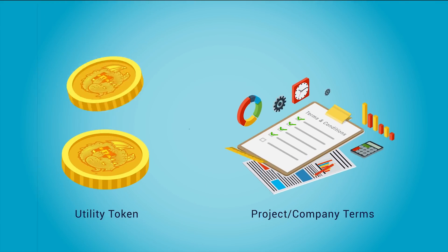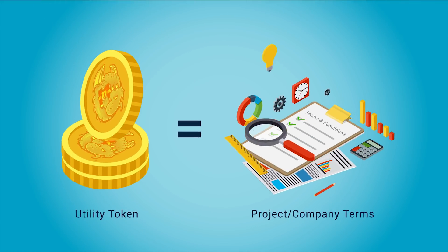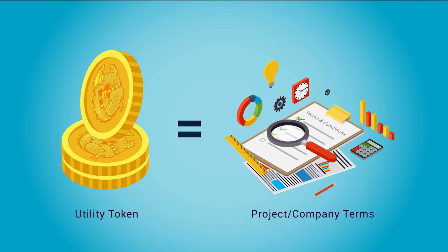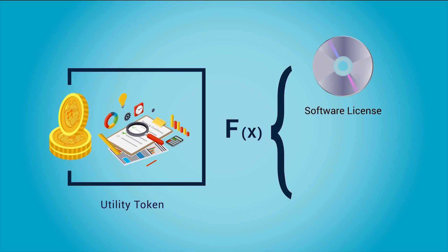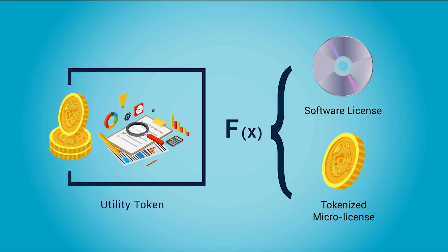Utility tokens symbolize predefined terms set by a project or company. These terms can function as a software license or tokenized micro license, whereby pre-arranged licensing terms can be formalized and define the function of the token.